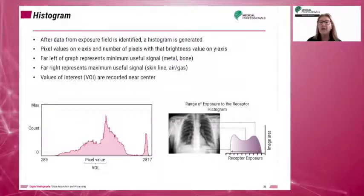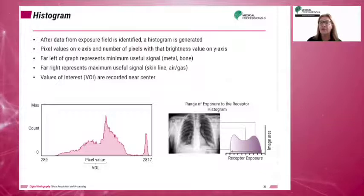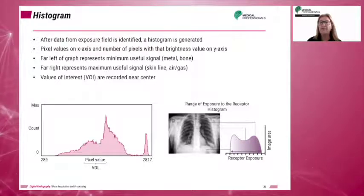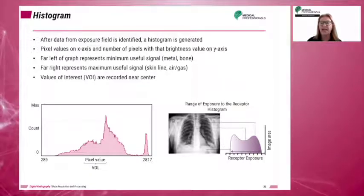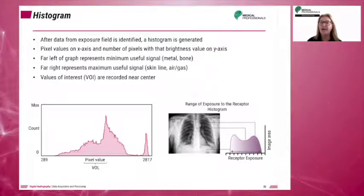The far left of the graph represents the minimum useful signal — metal and bone, the part of the beam most attenuated. The far right represents the maximum useful signal — the skin line, air, and lung tissues. Peaks and valleys represent subject contrast of the patient's tissues. The shape of each structure's histogram should remain fairly consistent from patient to patient.